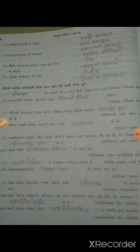ગણતરી કરવા માટેનું સૌથી પહેલું સાધન — અબેકસ. ત્યારે અબેકસ ઉપ્યોગ થતો. આ ખાલી જગ્યાઓ આપણે આગળના લેક્ચરમાં જોઈ લઈશું.